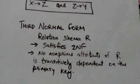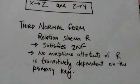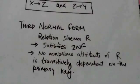A relation schema R is in Third Normal Form if it satisfies Second Normal Form and no non-prime attribute of R is transitively dependent on the primary key.